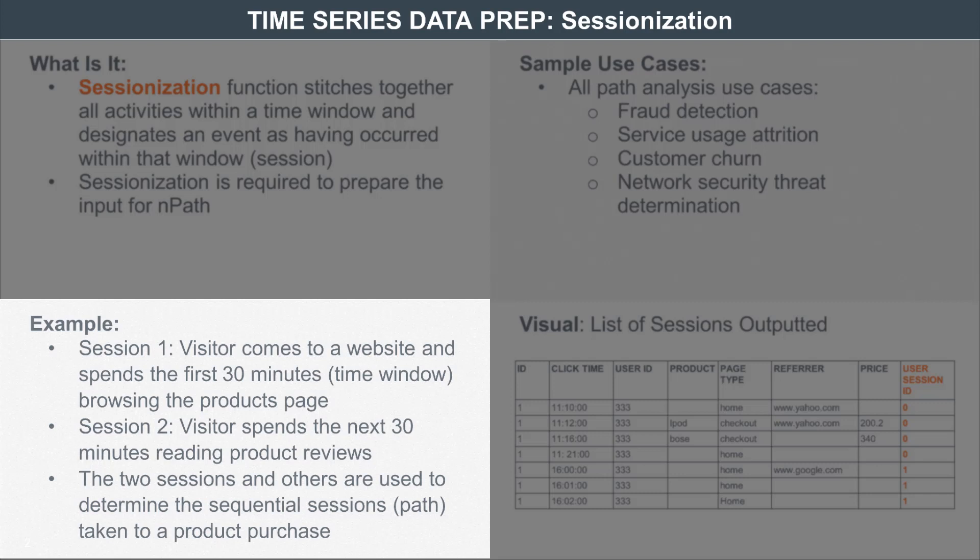In the case of manufacturing, for instance when looking at sensor data, the process is more elongated. There are things that happen within 30 minutes but also things that happen within a month. A manufacturing company might say they're interested in all activities within a 24-hour time period — any sensor activities that happen within 24 hours are considered one session, and anything beyond that is a second session, and so on.